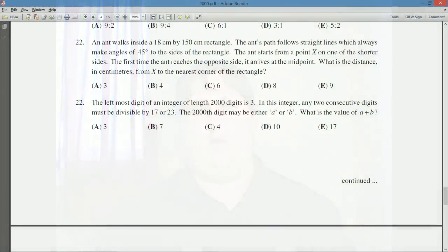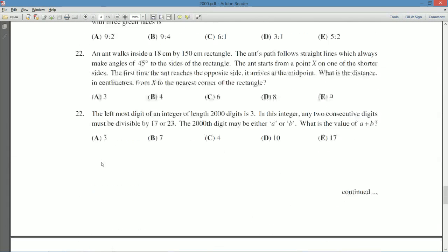But hopefully you guys have downloaded a copy of the contest and had a chance to take a look at it. So question number 23. The leftmost digit of an integer of length 2,000 digits. So we got an integer of 2,000 digits. I doubt we're going to be able to write them all out.